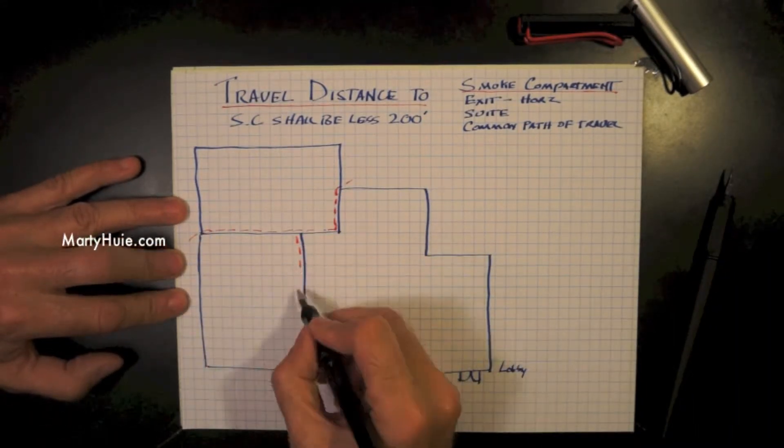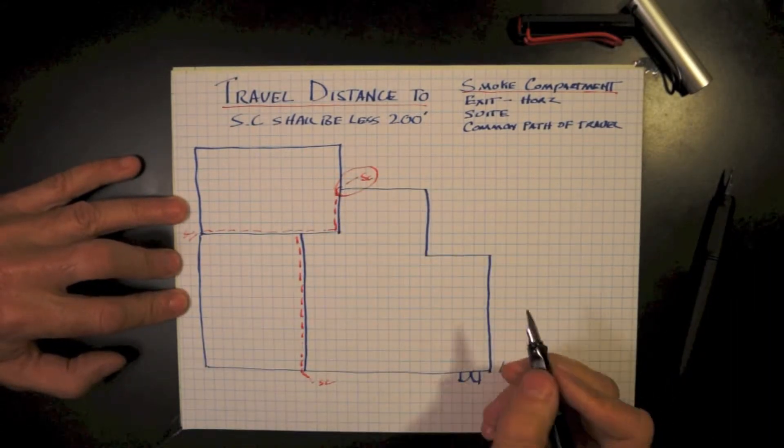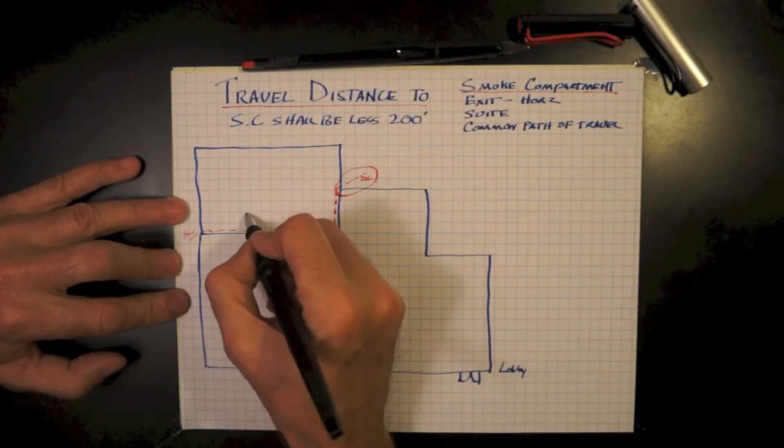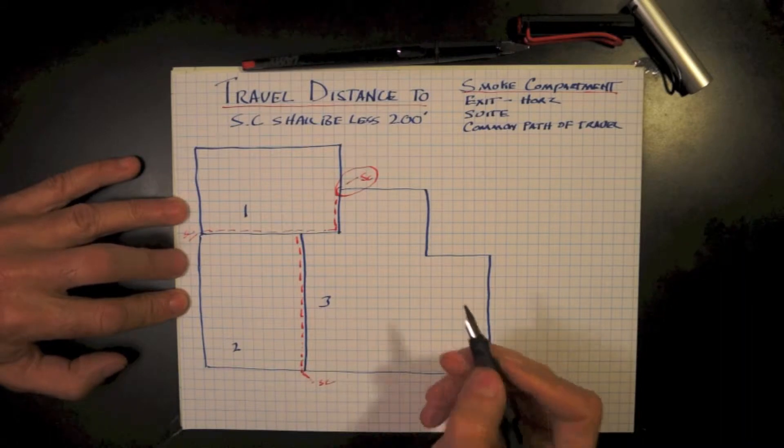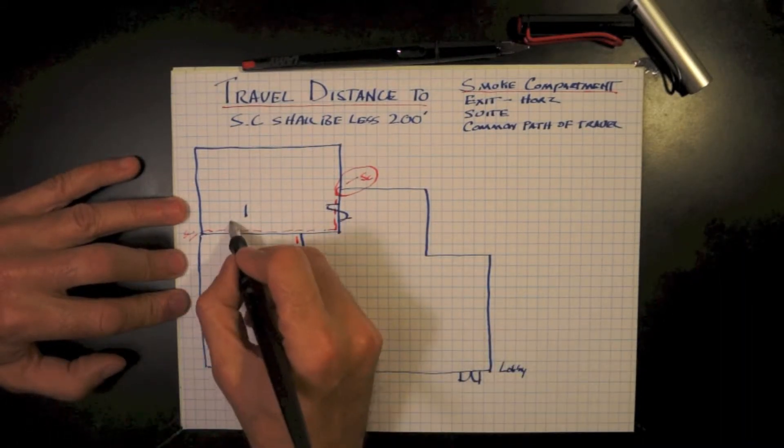Dash line represents the smoke compartment wall, and this little leg helps distinguish the smoke compartment. Let's label the smoke compartments 1, 2, and 3, and add some additional exits to the exterior.